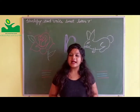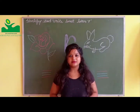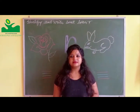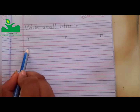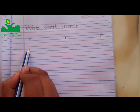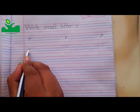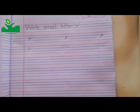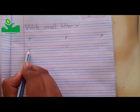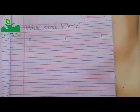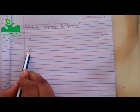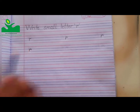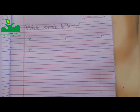Now we will write small letter R in the notebook. We will use two lines — first blue line and second blue line. Then we will draw a small curve. Then we will make a small curve, a little small curve. Here we will make a small curve.